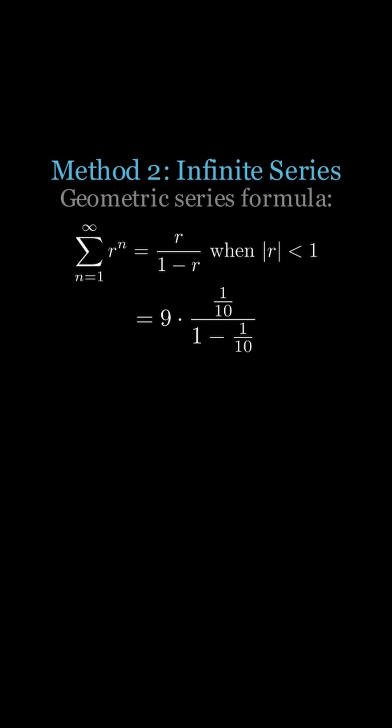We get 9 times 1 tenth over 1 minus 1 tenth, and simplifying this gives us 9 times 1 tenth times 10 over 9, which equals 1, so 0.999 repeating equals 1.